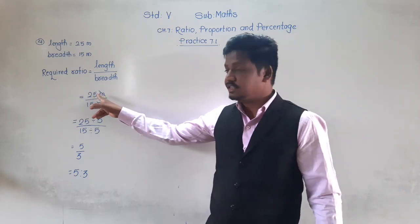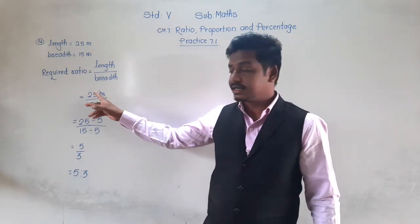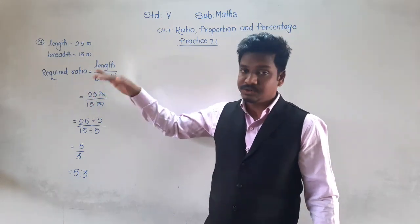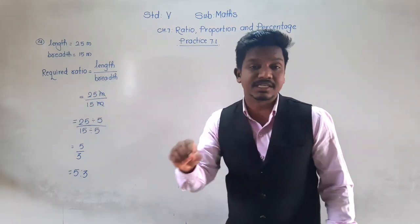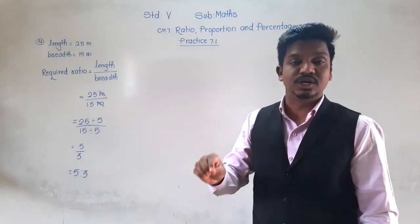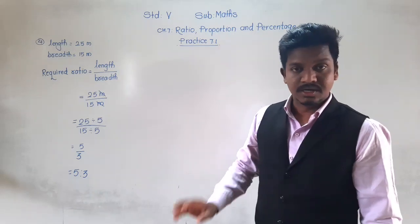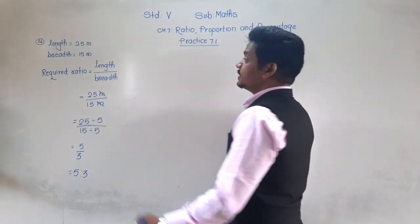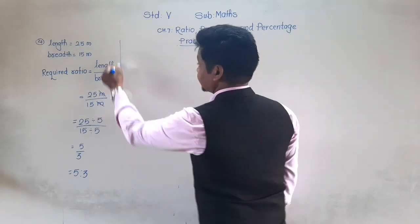Ratio means division, and in that division we have to convert it into the simplest form — the smallest term, the lowest term.